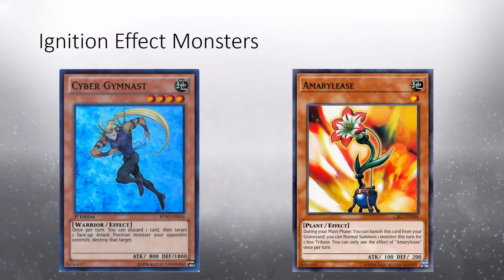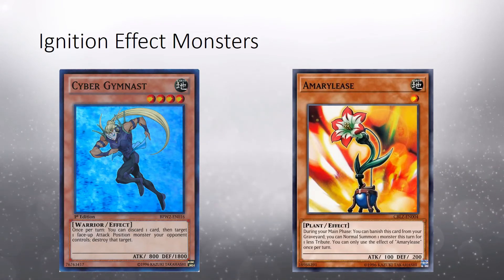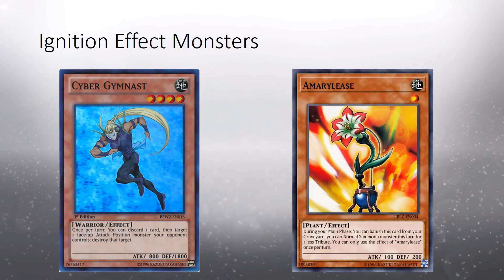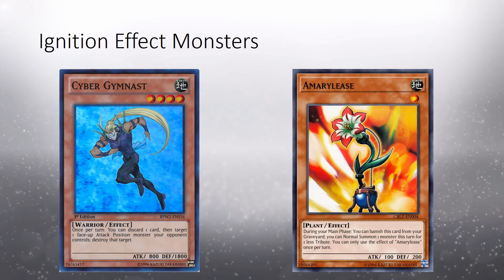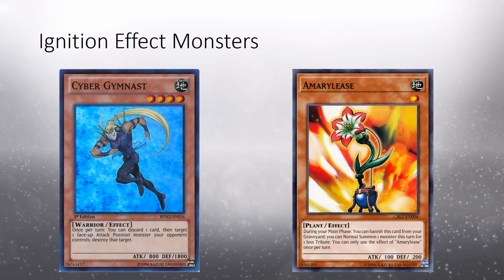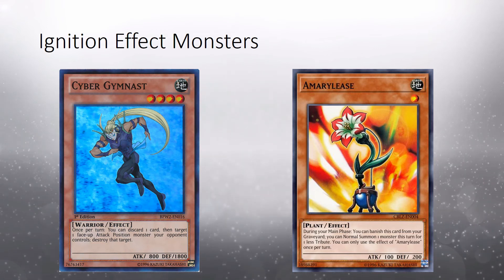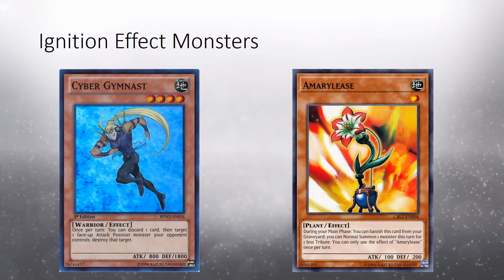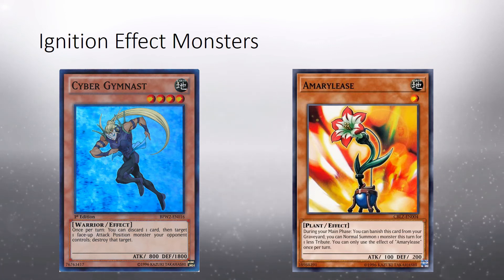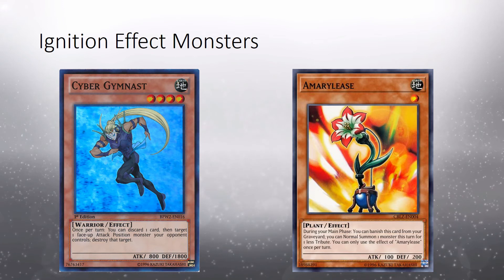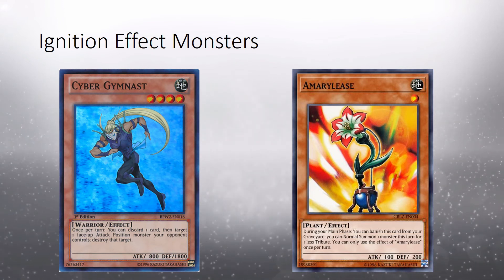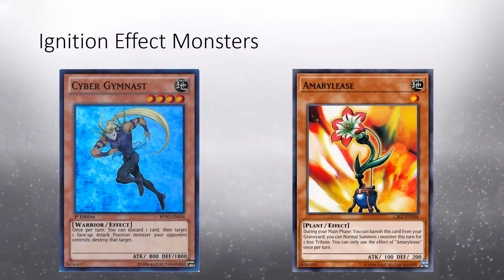Here we have some additional examples of ignition effects. First up we have Cybergymnast, a level 4 earth warrior monster. Its effect reads: Once per turn, you can discard one card, then target one face-up attack position monster your opponent controls. Destroy that target. We can see that it has the ignition effect indicators of once per turn and you can. It also has the cost of discarding one card. Therefore, in order for the effect of destroying that targeted attack position monster your opponent controls, you must pay the cost of discarding a card, which means sending a card from your hand to the graveyard.